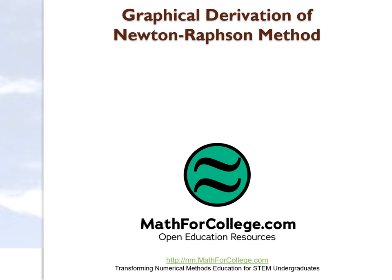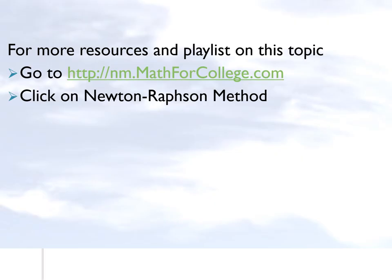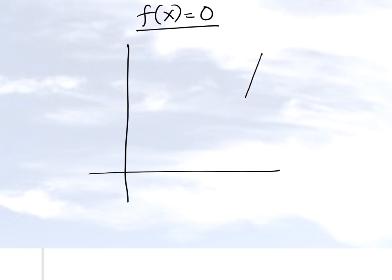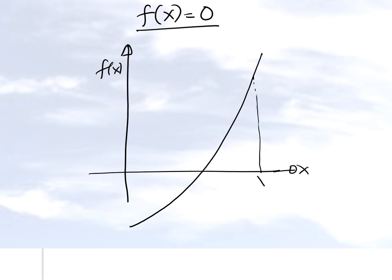In this segment we'll talk about the graphical derivation of the Newton-Raphson method. The Newton-Raphson method is based on finding the root of an equation f(x) = 0. So let's suppose we draw f(x) as a function of x, and what it is based on is choosing an initial guess x-naught for the root of the equation.